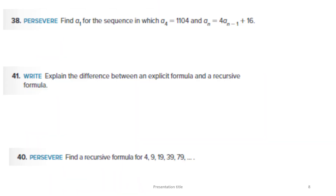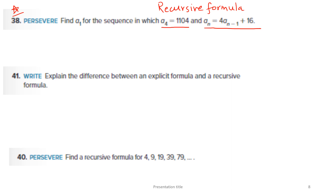Let's solve question 38 — quite an important question that could appear on your ministry exam. This is a recursive formula. It is recursive because A4, the fourth term, is given, and the general term A_n is expressed in terms of the previous term A_(n−1). We are going to repeatedly apply this formula to find A1, the first term.